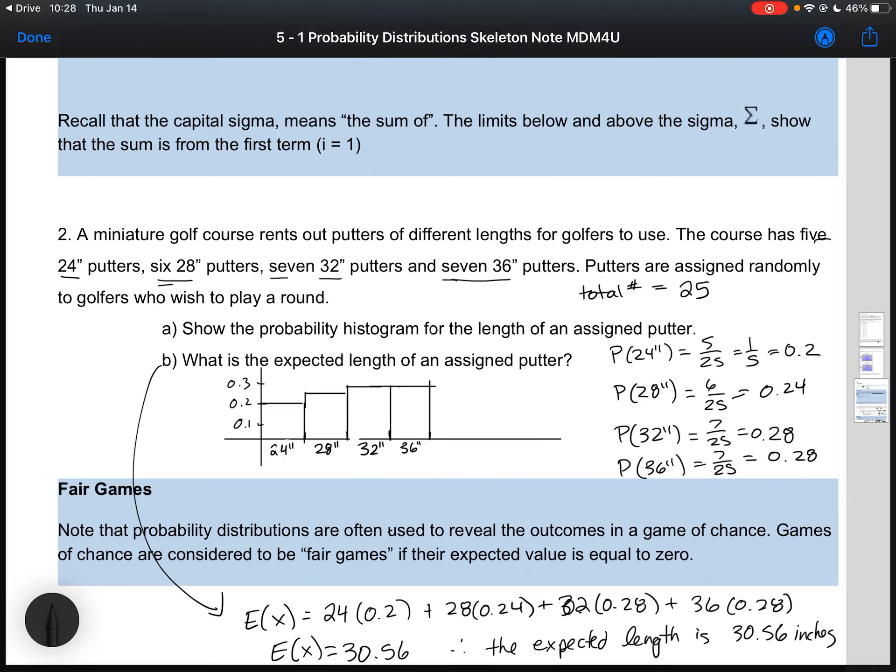It's okay that it's not an actually obtainable value. All it says is that probably our putter is going to be anywhere between 29 and 31, which kind of makes sense in terms of our data. Those are some examples of probability distribution questions and what a probability distribution is.